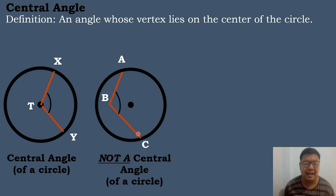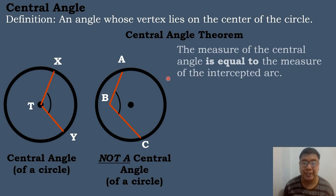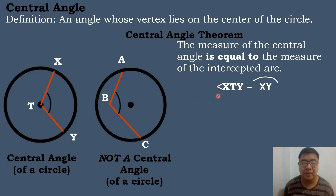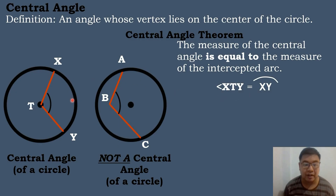Angle ABC is not a central angle. We have the central angle theorem, which states that the measure of the central angle is equal to the measure of the intercepted arc. So in the first figure, if angle XTY is the central angle, then it equals the measure of its intercepted arc, arc XY. For example, if the measure of angle XTY is 65 degrees, then arc XY is also 65 degrees.